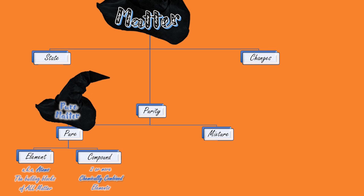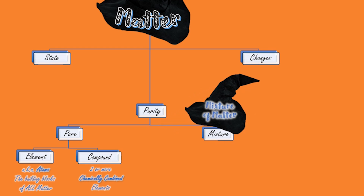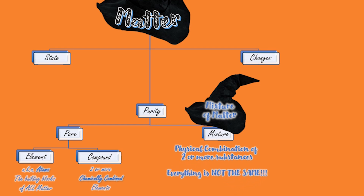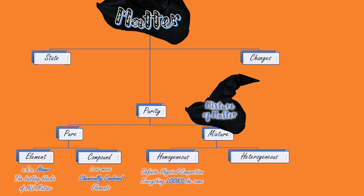Those substances that don't get sorted into the pure class are put into the mixture class. Mixtures of matter contain physical combinations of two or more different substances. This class differs from compounds because in this case the substances mixed together are only done so through physical means, not chemical. Within the mixture class, a substance will be further sorted into one of two different types of mixtures. Mixtures that contain a definite physical composition are called homogeneous mixtures, while heterogeneous mixtures consist of an indefinite composition, meaning we can see the physical differences in the substance's appearance.